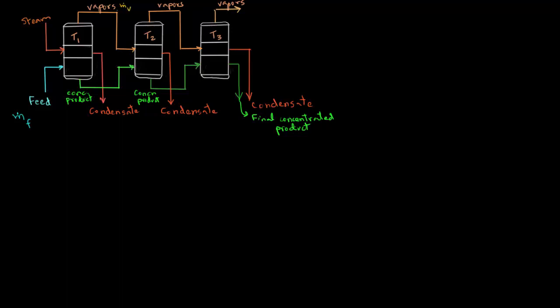As we see here in this schematic, we have identified various quantities related to the feed stream, the streams for vapors, for the concentrated product, for steam, as well as for condensate.